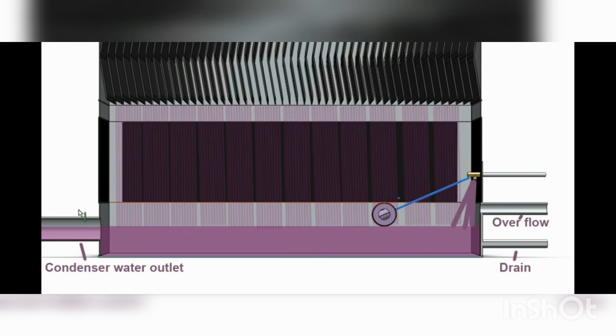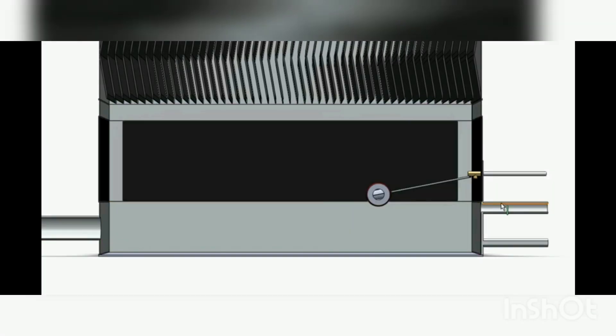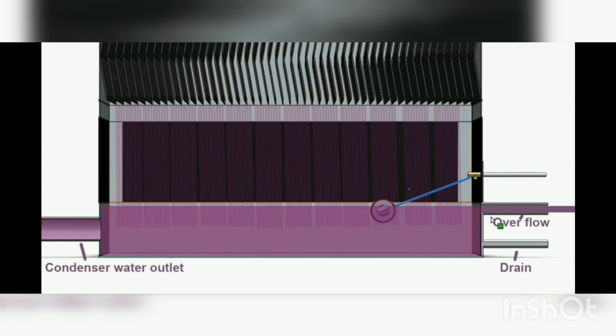Below the inlet pipe there is an overflow pipe. This overflow pipe ensures the water level does not exceed a certain limit. Any excess water is sent out through the overflow pipe. Below the overflow pipe, there is also a drain pipe.